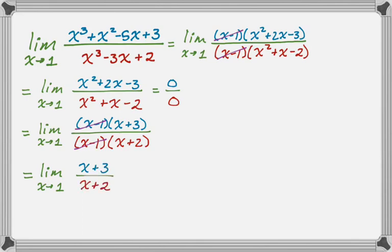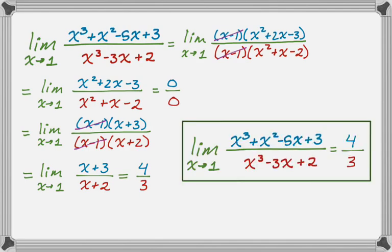Direct substituting now gives 4 over 3, which is not 0 over 0 — it's not indeterminate. So the original limit is equal to 4 thirds. The basic idea is that we can factor, we can use synthetic division, and we can look at the general form to help us factor. I hope you found this helpful — good luck.